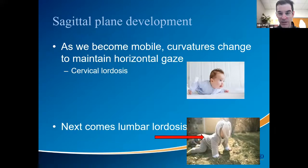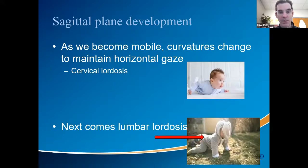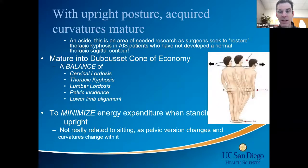The primary sagittal plane curvatures are thoracic kyphosis and sacral kyphosis. The acquired curvatures are cervical alignment and lumbar lordosis. As we become mobile, those kyphotic alignments begin to change. First you do tummy time — you want to maintain horizontal gaze, so you get cervical hyperextension. Then you start to crawl and get some lumbar lordosis, perhaps even a bit of thoracic lordosis.